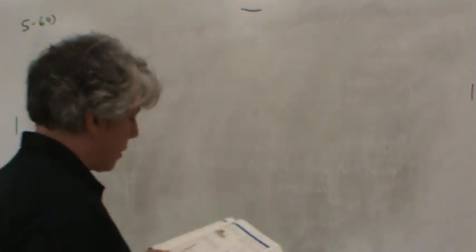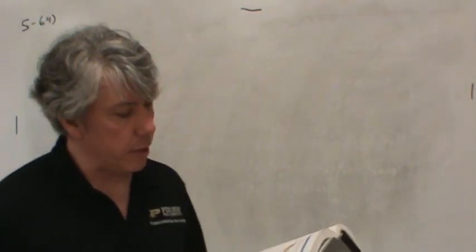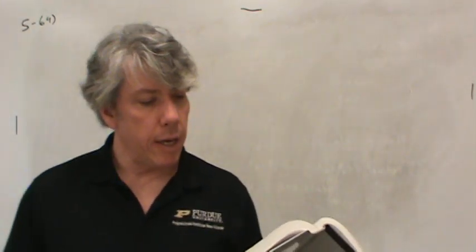This is problem 5-64, it's on page 253. The pole for a power line is subjected to two cable forces of 60 pounds, each force lying in a plane parallel to the XY plane, parallel to ground, the horizontal.